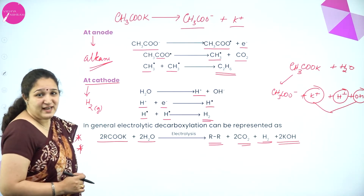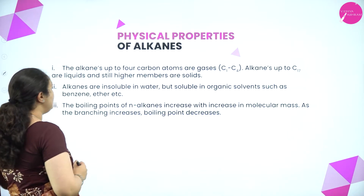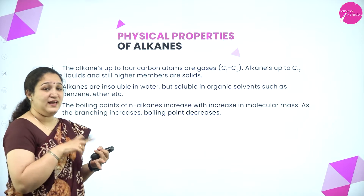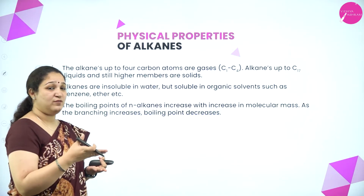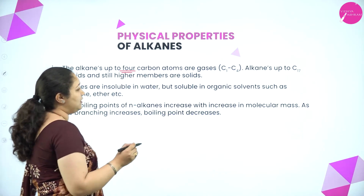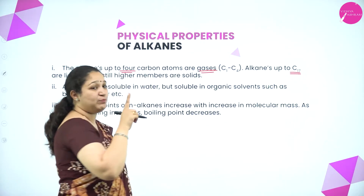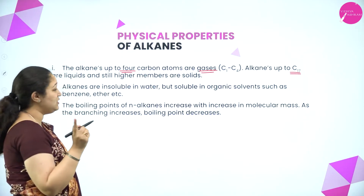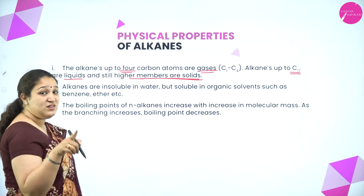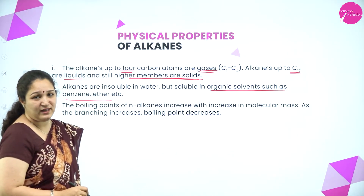Now we move to the physical properties of alkanes. The lower members are gases, then liquids, and the higher members with many carbon atoms are solids. Alkanes up to four carbon atoms (C1 to C4) are gases; from C5 up to C17 they are liquids; and still higher members are solids.